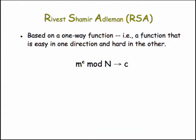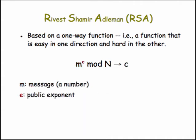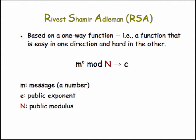So what makes RSA hard? What protects RSA from Eve? It's also based on a one-way function — our familiar modular arithmetic function — which is easy in one direction and hard in the other. In this case, the M in this expression represents the secret message being communicated. The E is a public exponent — it's part of the public key. The N is a public modulus, also part of the public key. And C is the resulting encrypted message.